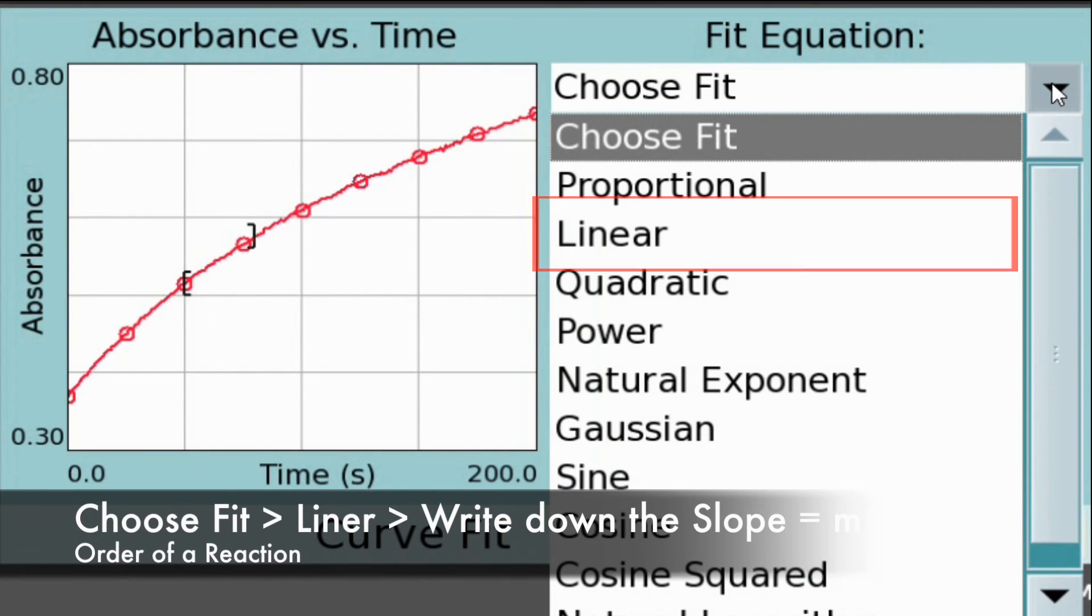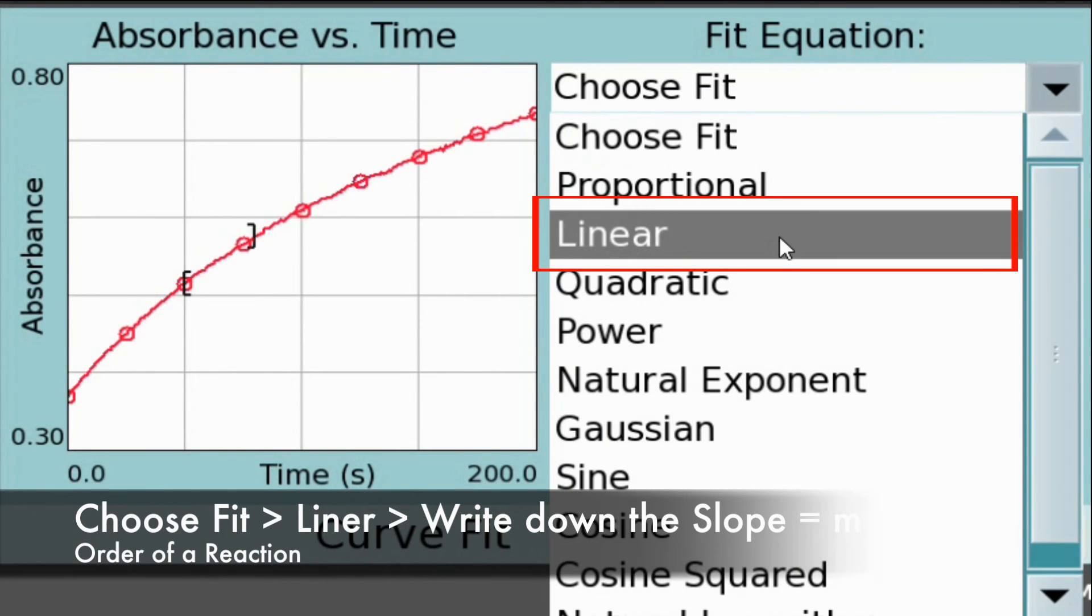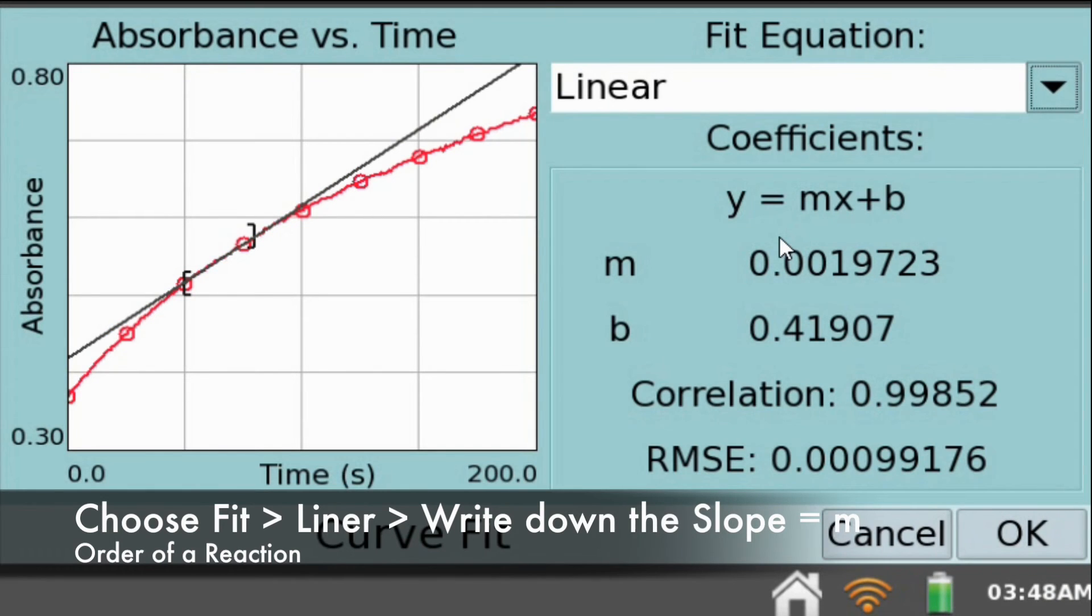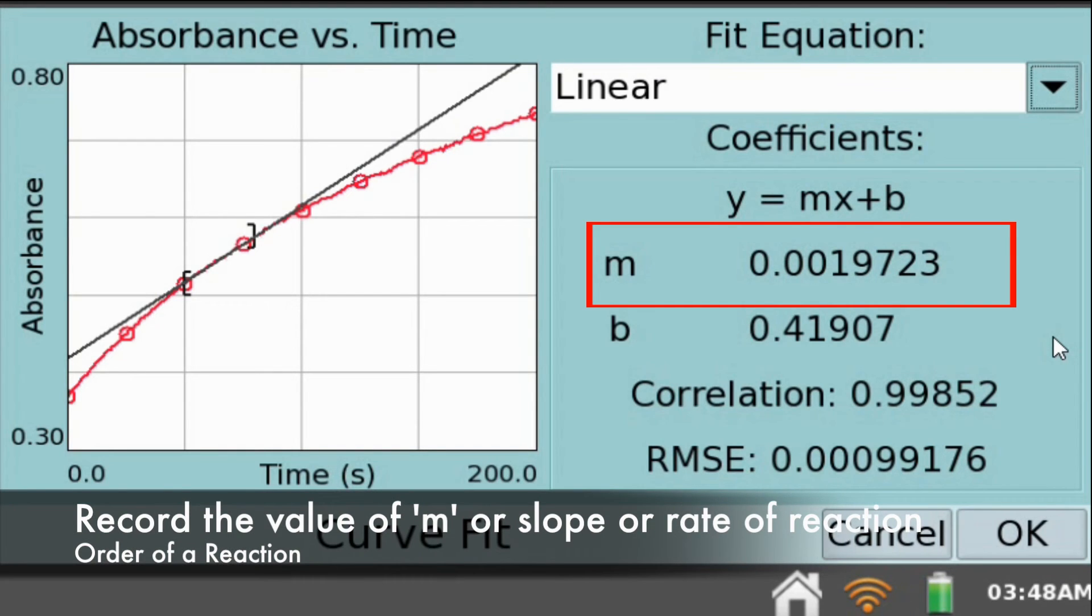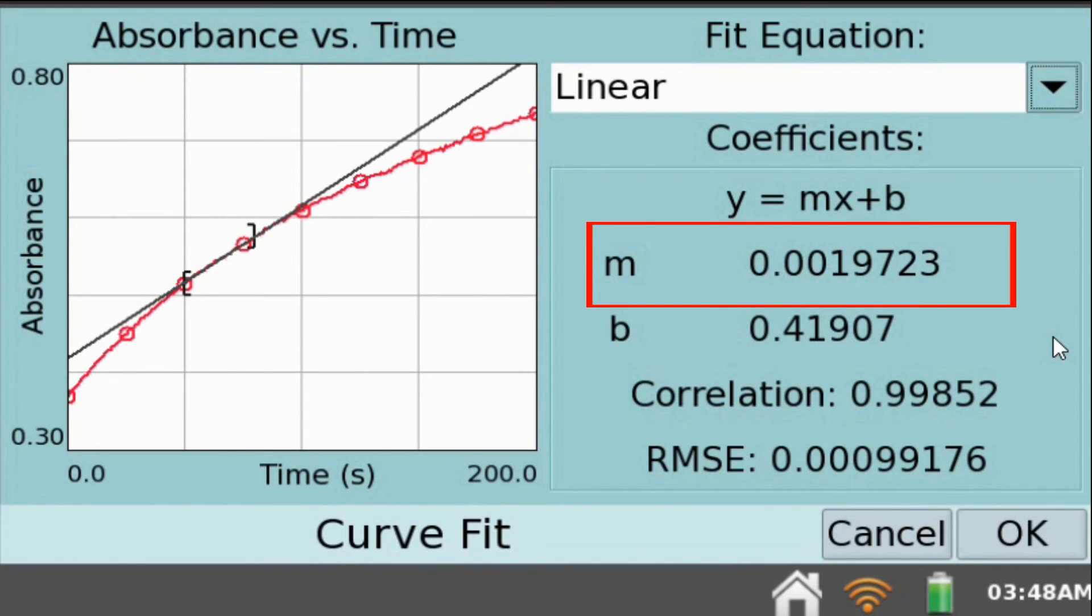From the drop down menu, select linear. This will give you the slope of the tangent. In this case, the value of m, or slope, or rate of reaction is equal to 0.0019723. Record this data on your data table under run 3.